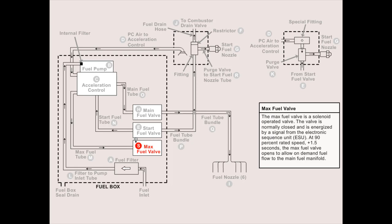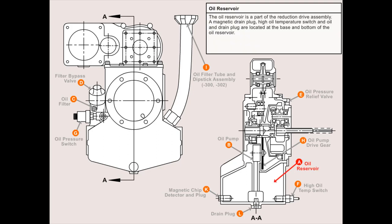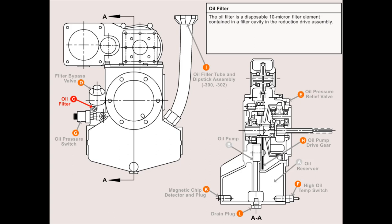The APU is lubricated by a self-contained oil system. The oil reservoir is a part of the reduction drive assembly. A magnetic drain plug, high oil temperature switch, and oil drain plug are located at the base and bottom of the oil reservoir. The oil pump is part of the reduction drive assembly and draws oil from the reservoir, pumping it through drilled passages in the oil filter. The oil filter is a disposable 10 micron filter element contained in a filter cavity in the reduction drive assembly. The filter bypass valve consists of a spring-loaded ball in a housing above the oil filter, opening to allow oil to bypass the filter should it become clogged.